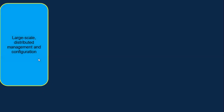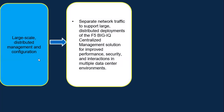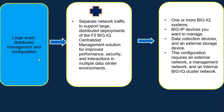The last type of deployment is large scale distributed management and configuration. In this deployment, it depends on how many data centers you have. If you want to separate your management between different data centers and ensure the management traffic between BigIQ and BigIP devices is completely different across data centers, you'll use one or more BigIQ systems, the BigIP devices, DCDs, and an external storage device. This deployment needs three separate connections: the external network, the management network, and an internal BigIQ cluster network.